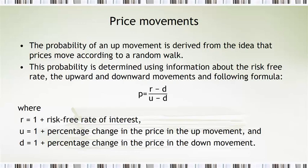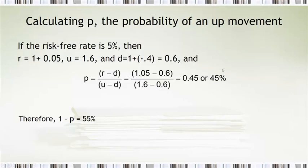So this is the probability that we'll be using in our weighting scheme here. When we apply the numbers, the 5% risk-free rate, so r is 1.05. u is 1.6 because we have 60% movement in the up market. So 1 plus that is the 1.6. The d is 1 plus the negative 40%, or 0.6. Therefore, we get a probability of 0.45.